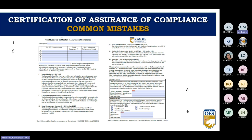Key areas on the certification form: the sub-recipient name should match what is written on the face sheet. The applicant should complete the CalOES program name and the grant sub-award performance period, leaving the sub-award number blank for your program specialist to fill in. Ensure appropriate signers have signed — this would be the official designee by the governing board. For federally recognized tribes and community-based organizations, it must be the governing board chair who signs.